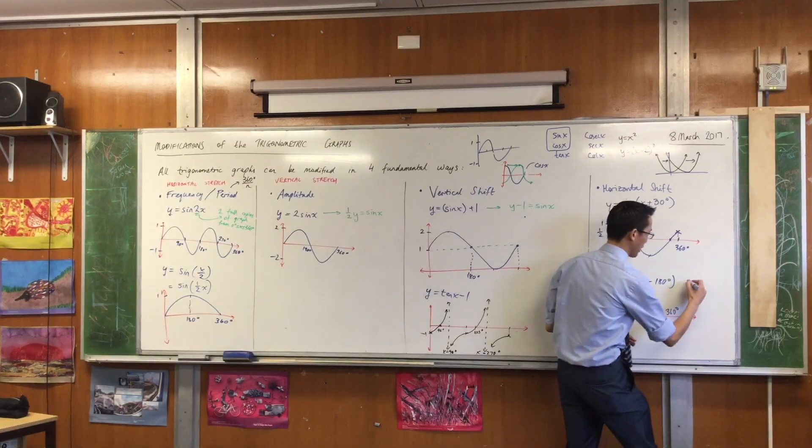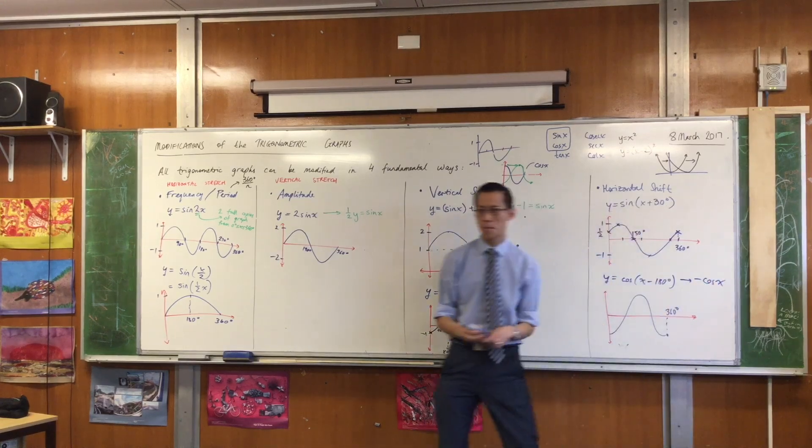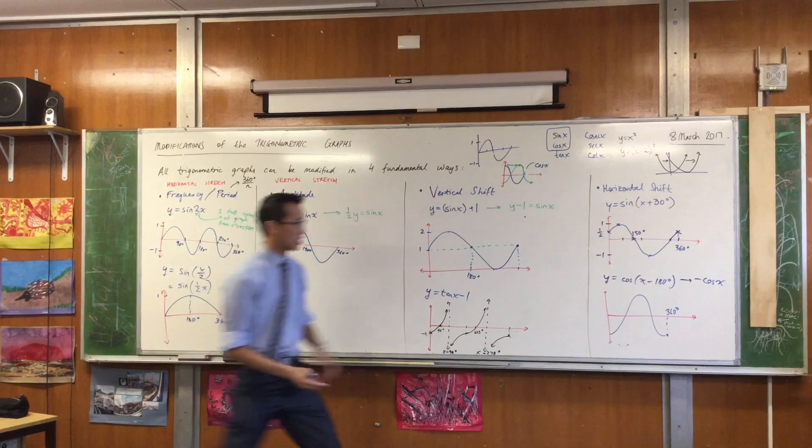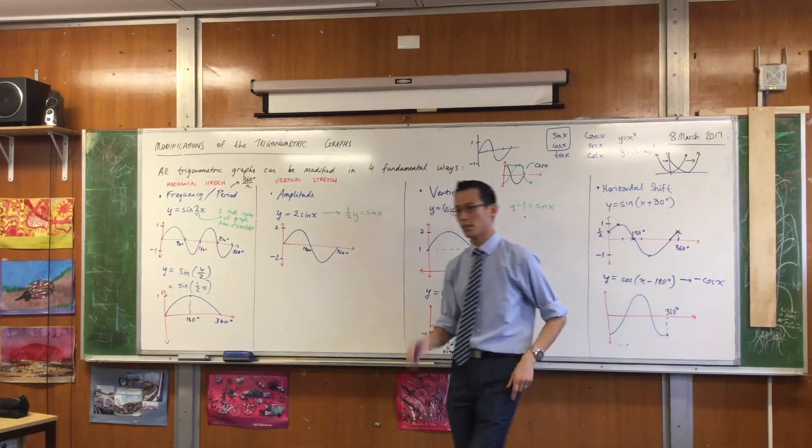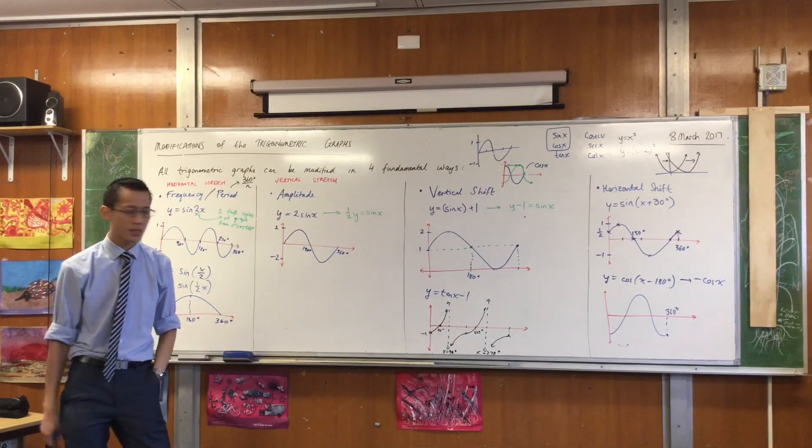This is actually something we're about to get to, but I don't have enough space on the board. This identity, that cos(x - 180) is always minus cos(x). This is something we're going to explore a little bit later when we look at the double angle and compound angle results.